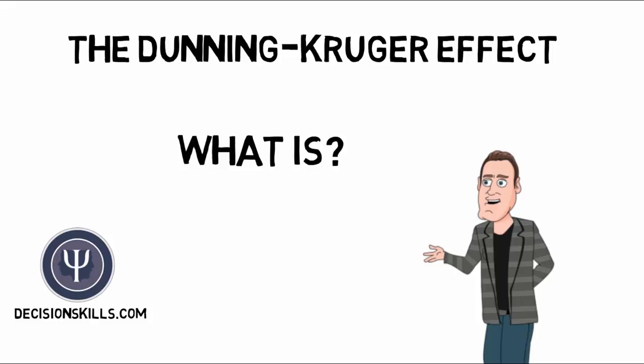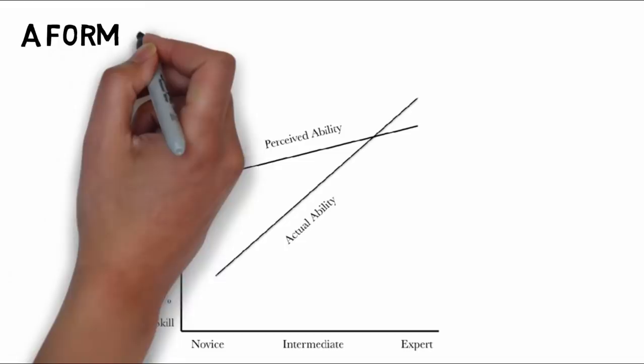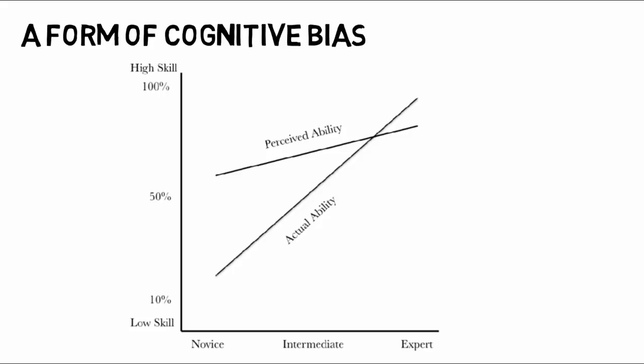What is the Dunning-Kruger effect, why is it important, and what can you do about it? A form of cognitive bias, the Dunning-Kruger effect demonstrates that across all ability levels, we most often misjudge our own performance relative to our peers.